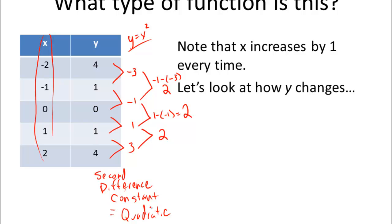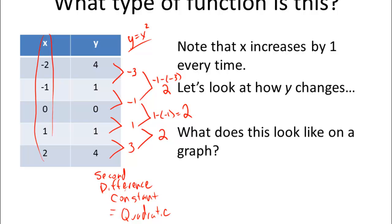So now we've got linear, where the first difference is constant, and quadratic, where the second difference is constant. On a graph this looks like a parabola, and what it's saying is that each time y increases by more and more because the second difference is 2.